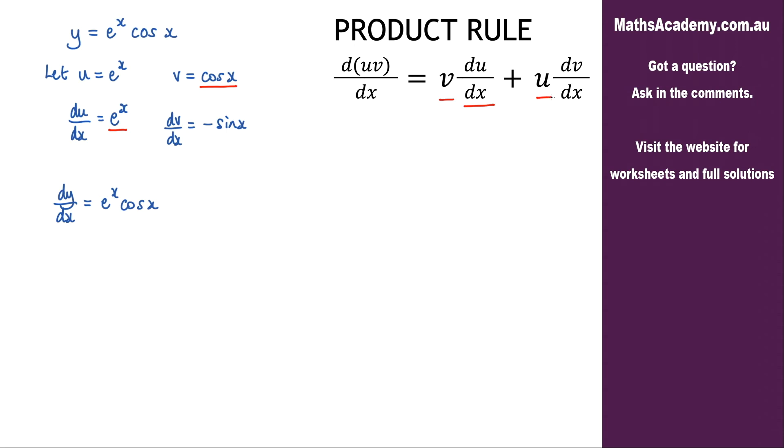We're adding on u multiplied by dv dx. That would be negative e to the x sine x.